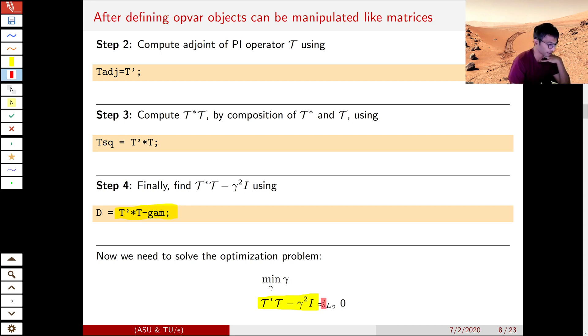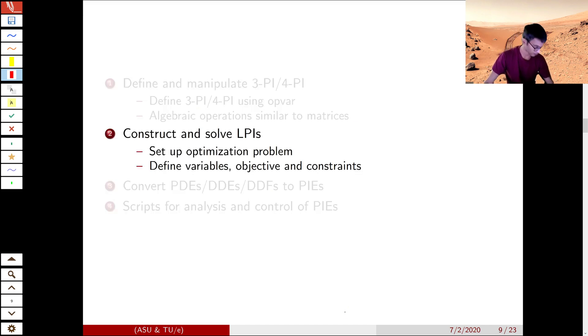However, we still haven't learned how to constrain this operator to be negative, which we will discuss in the next step. This is where the second feature of PIETOOLS comes, basically setting up optimization problems that have PI constraints or PI variables.